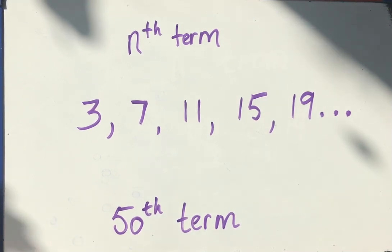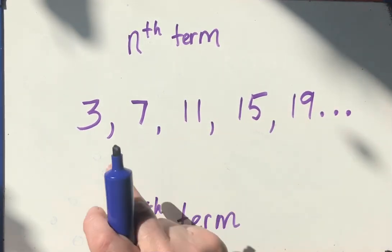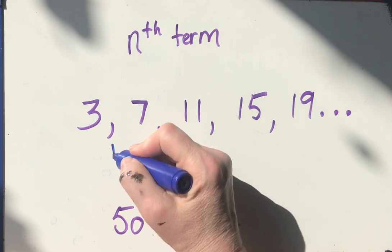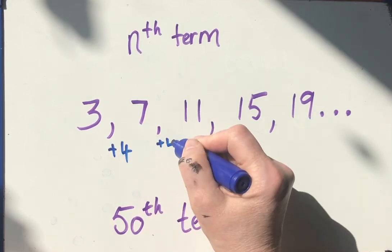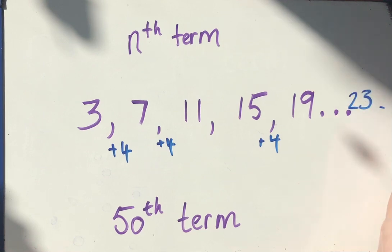If you have watched the video on generating the first five terms of a sequence, you'll know that this sequence here, if I wanted the next number, if the question was simply what's the next number in this sequence, you'd say well, I've got to add four each time. 15 plus four is 19, so the next term would be 23 and so on.